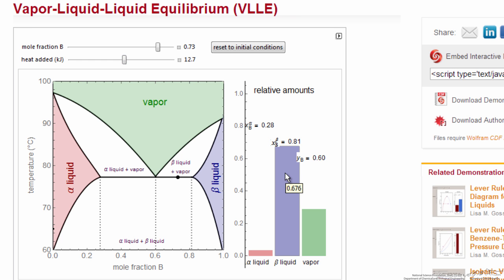But now notice that the alpha liquid is preferentially disappearing compared to the beta liquid, and we're making vapor. As we continue to add heat, we're going to get to the point where all the alpha liquid disappears.